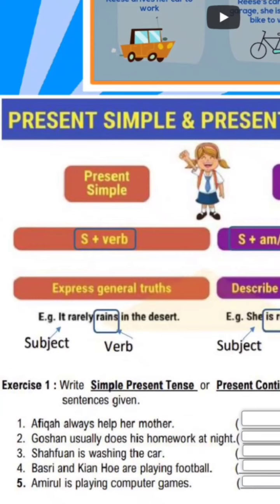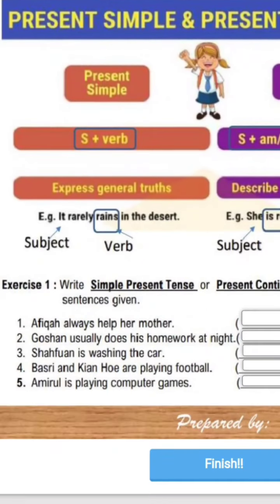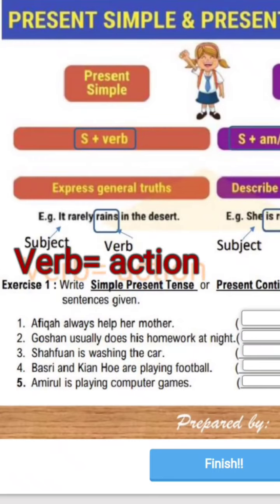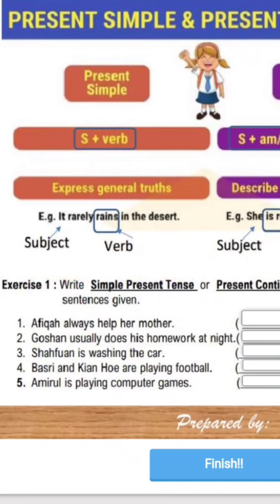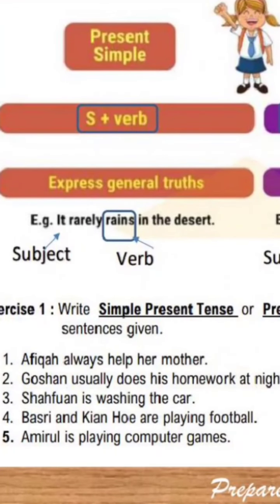Subject ialah kata nama. Biasanya mula dengan subject pronoun, contohnya I, you, we, they, ataupun nama-nama orang. Kemudian kita lihat di sini, verb ialah kata kerja di mana menerangkan apa yang dilakukan — actions. Usually we use Present Simple to express general truth, contohnya, example di sini kita lihat: